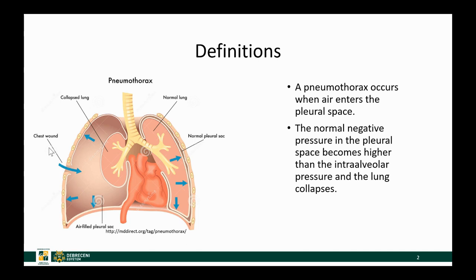If, for example, there is a trauma to the chest and air enters into the pleural cavity, the negative pressure will rise and that will cause collapse of the lung — this is the case of a pneumothorax.